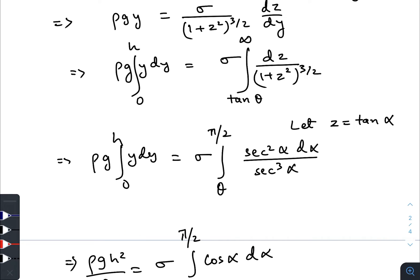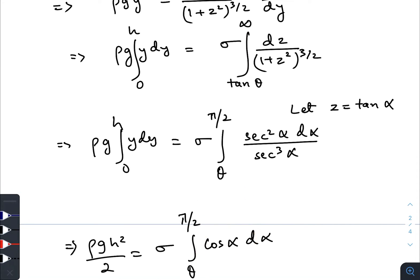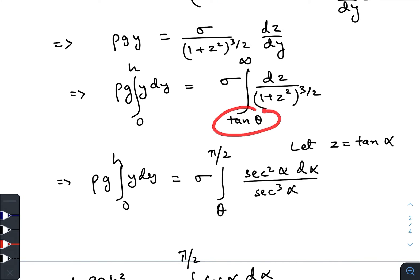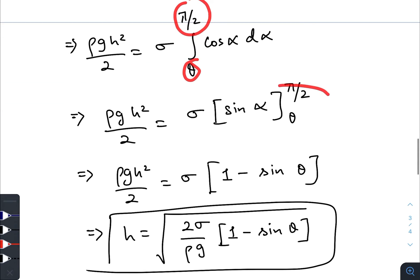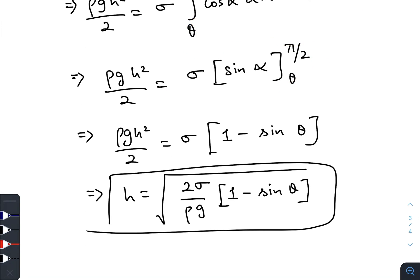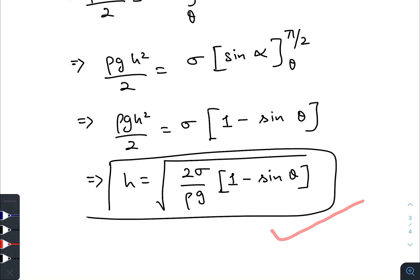So we will just put the values here. We have used the limits, now we will just put z equals to tan alpha. So this whole thing simplifies to cos alpha and we will also change the limits. So for z equals to tan alpha, the lower limit becomes theta and the upper limit becomes pi by 2. So our integration reduces to rho g h square by 2 equals sigma integral cos alpha d alpha from theta to pi by 2. Integrating this side and solving it, and finally we get the height of the liquid like this.